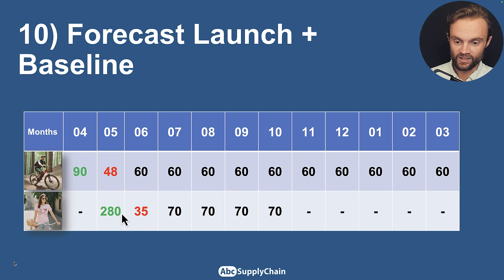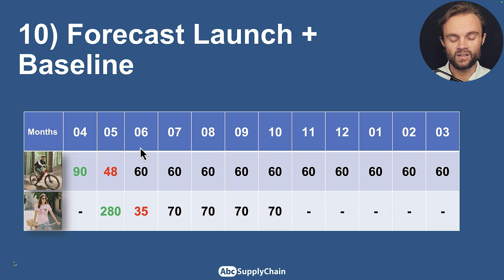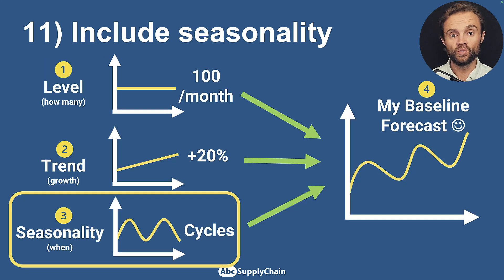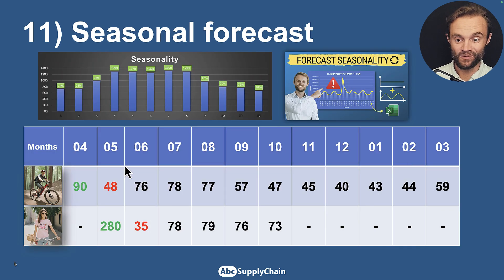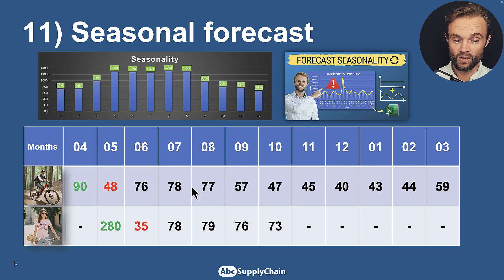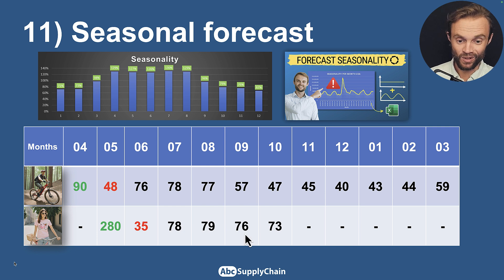You can ask your customers what a typical launch looks like if you've never done this before. Now apply those launch factors: 90, then 48, then the baseline — same for the collection with its six-month lifecycle. You now have a decent forecast, but it's quite flat. In reality, you sell more mountain bikes in summer than winter, so you need to include seasonality. I discuss this in multiple videos on this channel — you have the level, the trend, and the seasonality to build your baseline forecast. Apply seasonality and you'll see more sales in summer than winter.